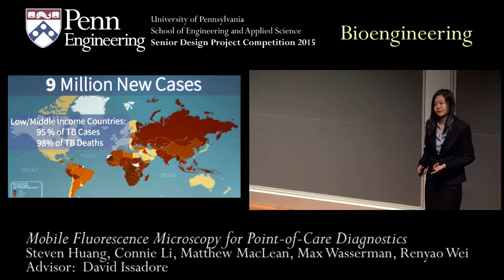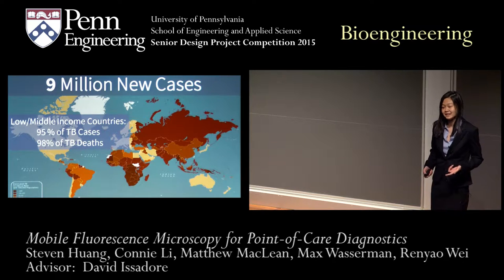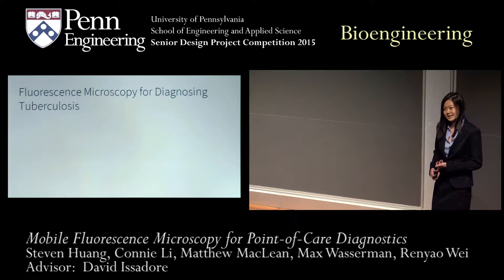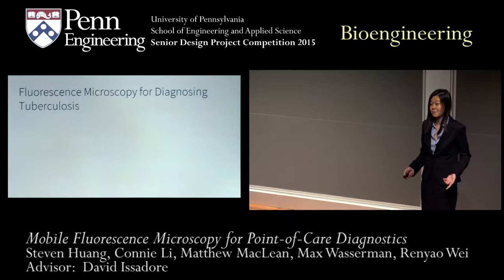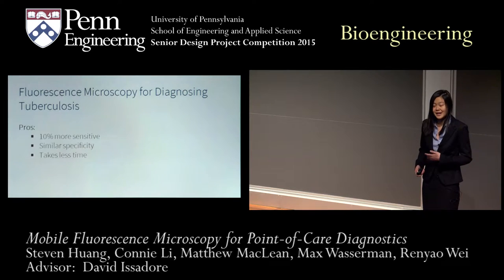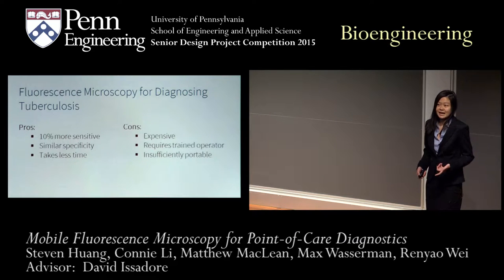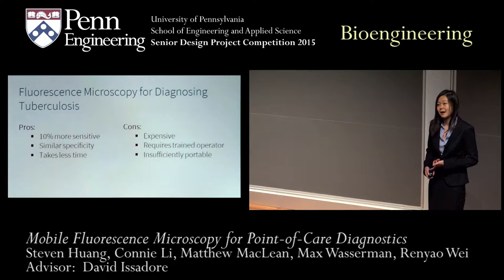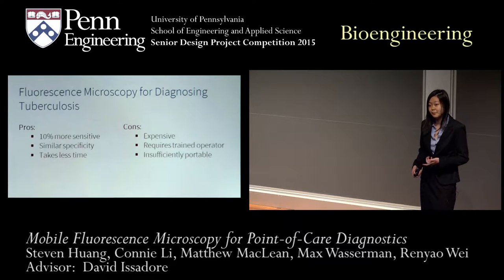Therefore, to effectively combat tuberculosis we really need an accurate and rapid way to diagnose the disease in these resource-limited settings. Currently the main method used is direct sputum smear light microscopy, in which a physician takes a nasal swab, smears it onto a slide, and examines it under a light microscope. This is great in that it can be performed in any setting, is really cheap, and has very high specificity values, meaning very few false positives. However, it takes three days because two samples are required on two consecutive days and the evaluation takes 24 hours, meaning not all patients will return and some diagnoses will be lost.